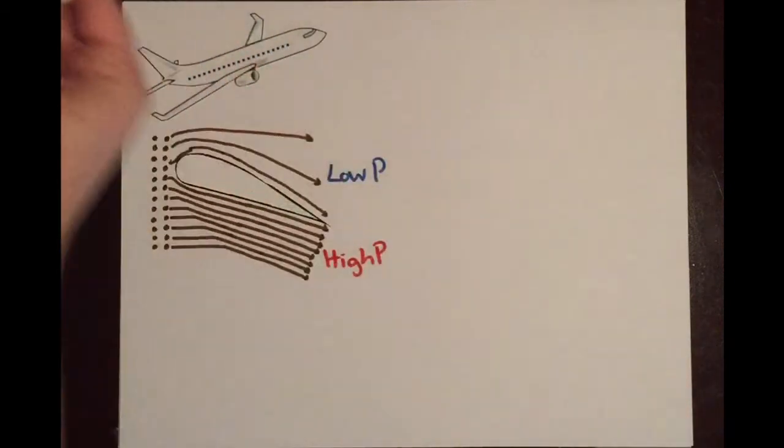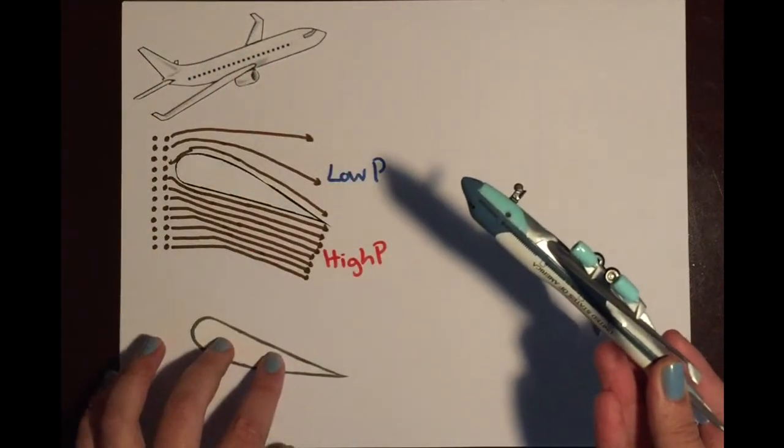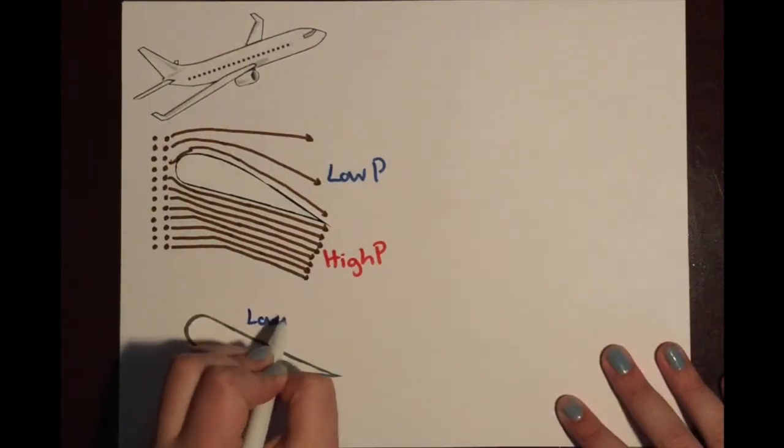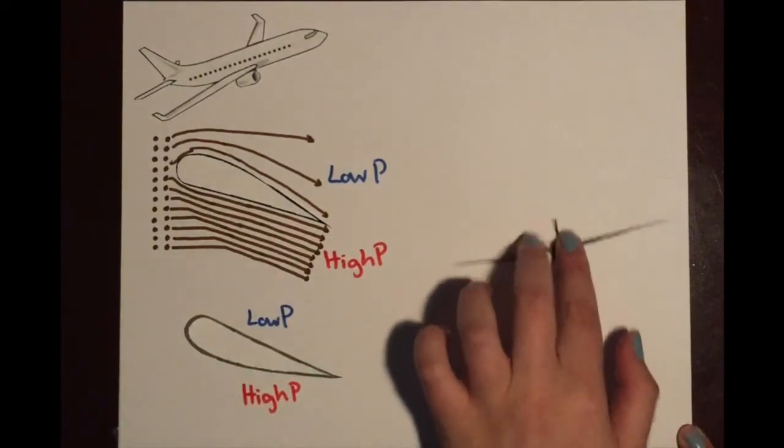But what if the plane is flying upside down? Well, as long as the nose of the plane is still pointed up, the air particles will still be affected in the same way. Okay, so let's get back to our original question.